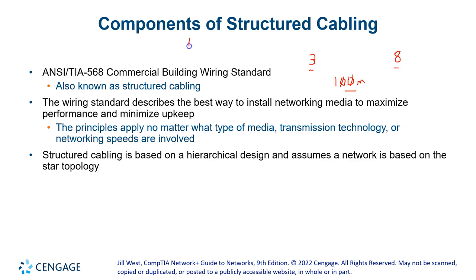So we've got UTP — unshielded twisted pair — and we've got STP, shielded twisted pair. Fluorescent lights, electromagnets, heavy machinery with motors — things that cause EMI, electromagnetic interference — can really bugger with signals across unshielded cabling. Shielded cabling is thicker and harder to work with around tight spaces and corners, but it is less prone to EMI errors.